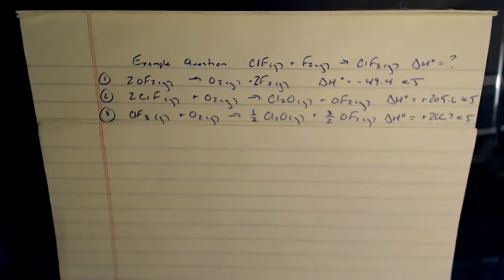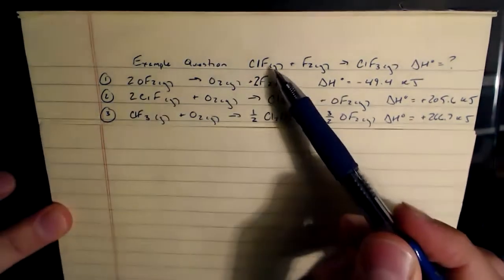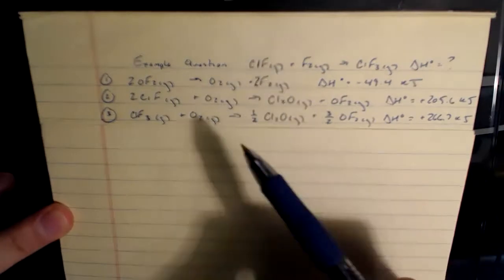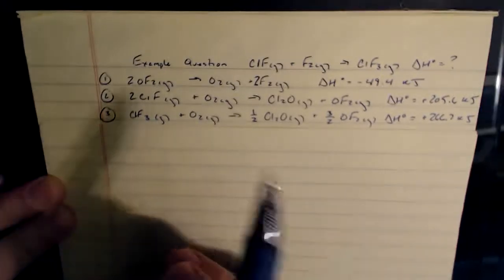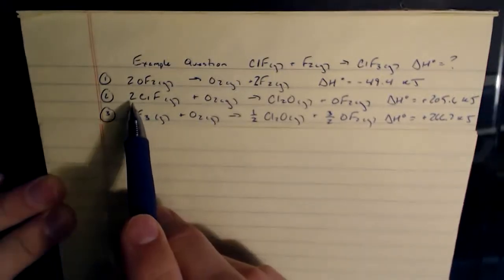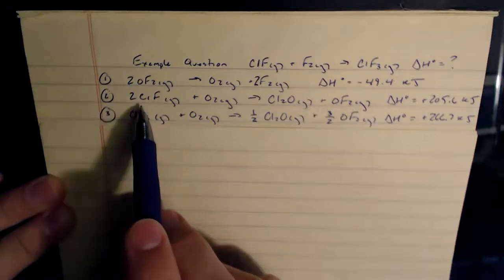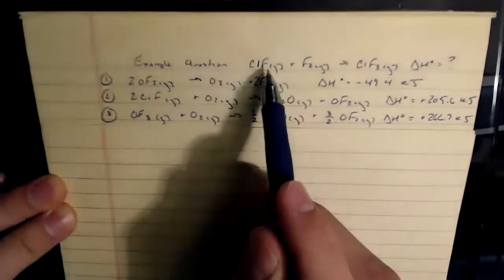The strategy for these Hess's Law problems is to target the reactions that are given to you in your toolbox and match up things that are in the equation up top that we're trying to build. So the first thing I'll look for is ClF. It only appears in one of my equations, and that's equation number 2. I don't have to worry about it coming from 1 or 3. I know it has to come from 2. But equation 2 gives me 2 ClF, and I only want one of them.